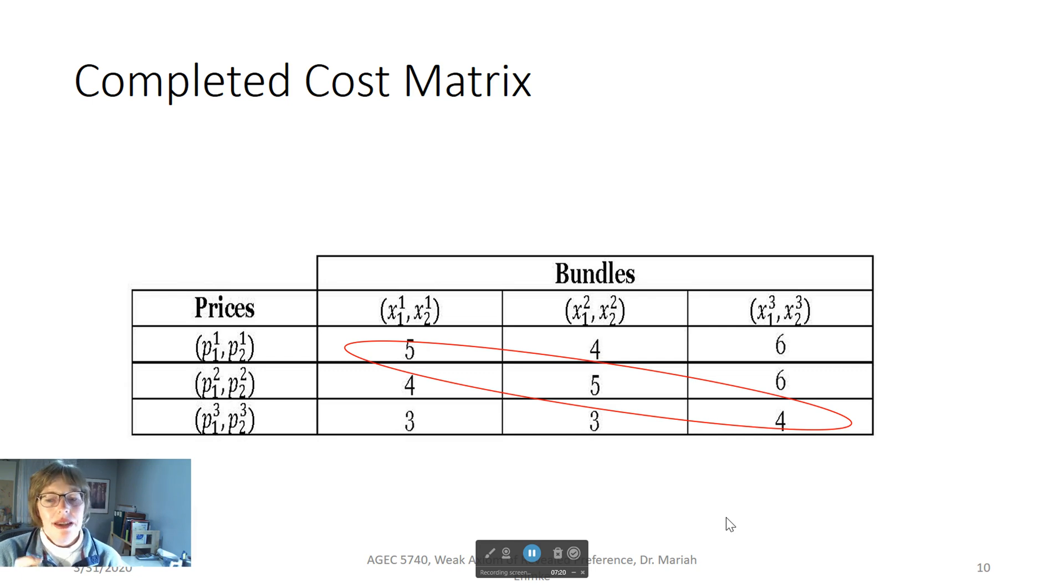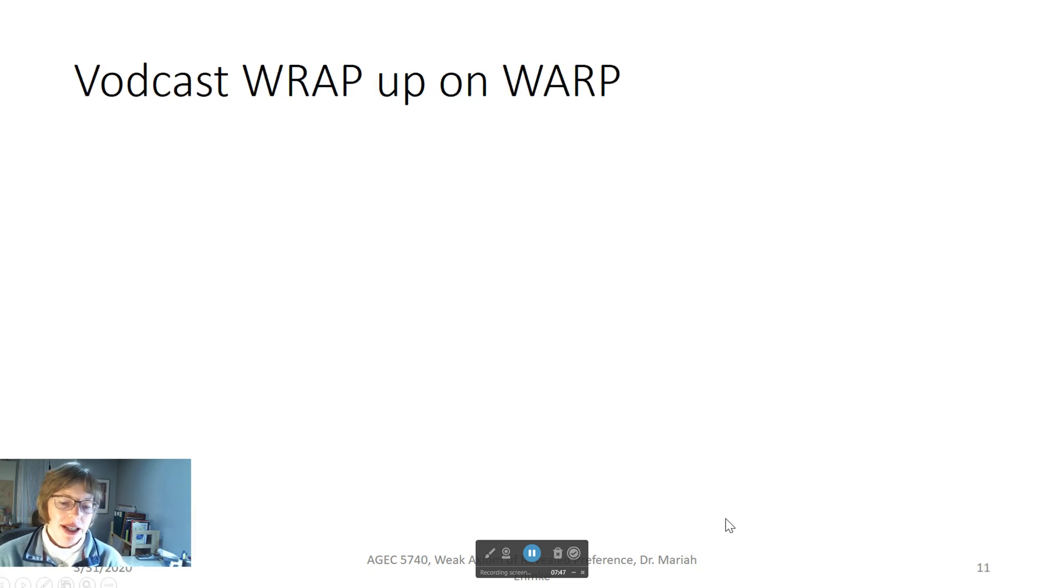Yet, the consumer chose X1 to the third and X2 to the third. Therefore, because they were willing to pay more to get that third bundle, we say bundle 3 is revealed preferred to bundles 1 and 2. This principle will come in handy when you are doing your SmartWork homework this week. You may read pages 127 to 129 for more scenarios around WARP.